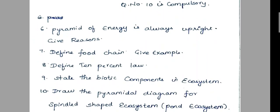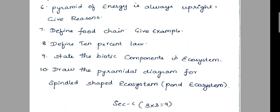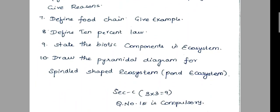7th question: define food chain, give example. 8th question: define 10% law. 9th question: state the biotic components in an ecosystem. 10th question: draw the pyramidal diagram for spindle shape ecosystem, that is pond ecosystem.